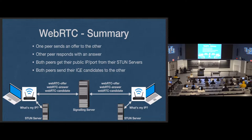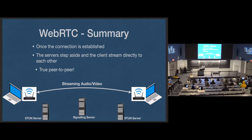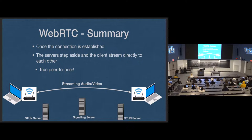We call these ICE candidates, for what it's worth. After all that, the signaling server steps out of the way. The STUN servers have done their job — they just get one request and return one response per user. They establish a UDP connection and start streaming directly with each other. All the servers are done at that point. It's a true peer-to-peer connection after the signaling server negotiates these offers, answers, and candidates.